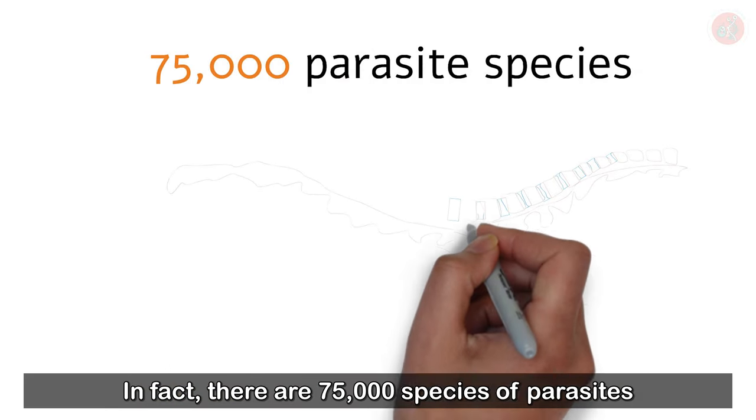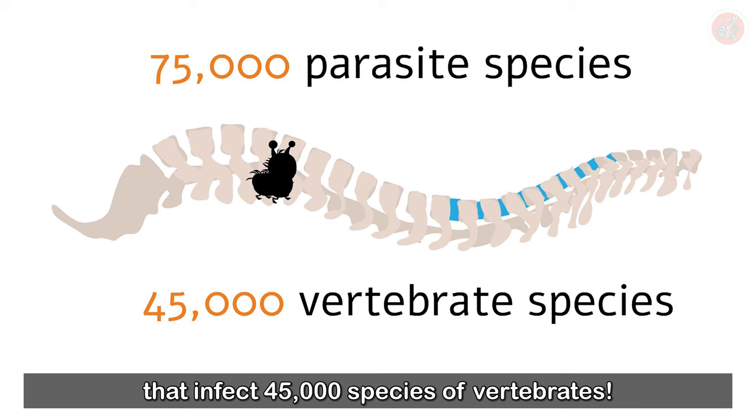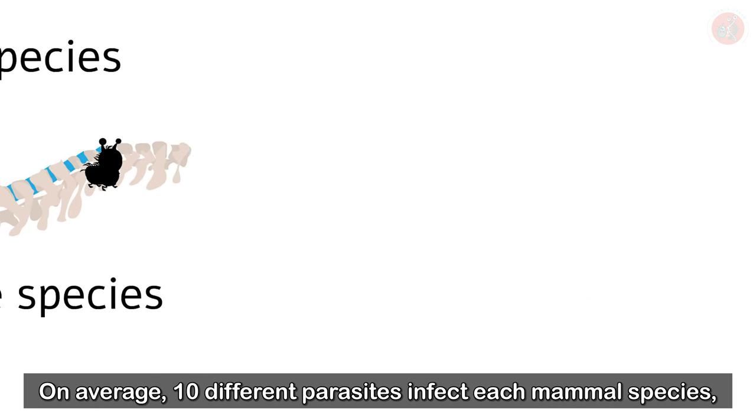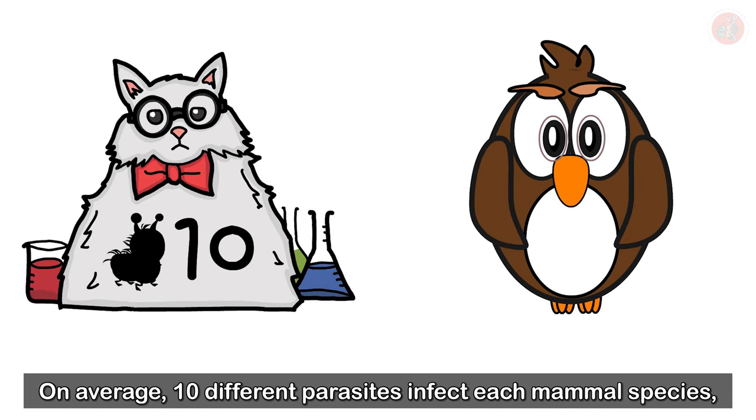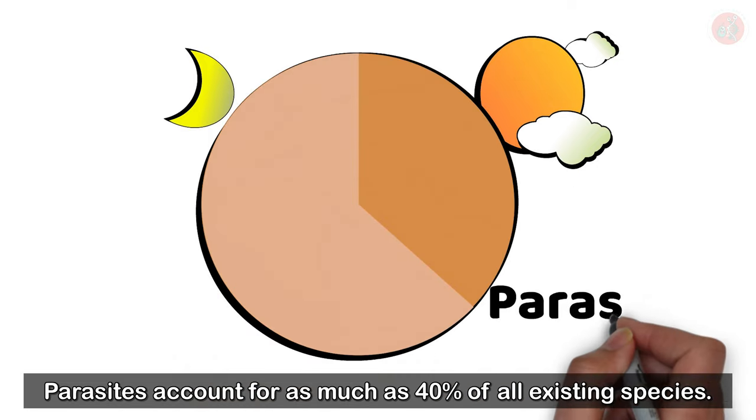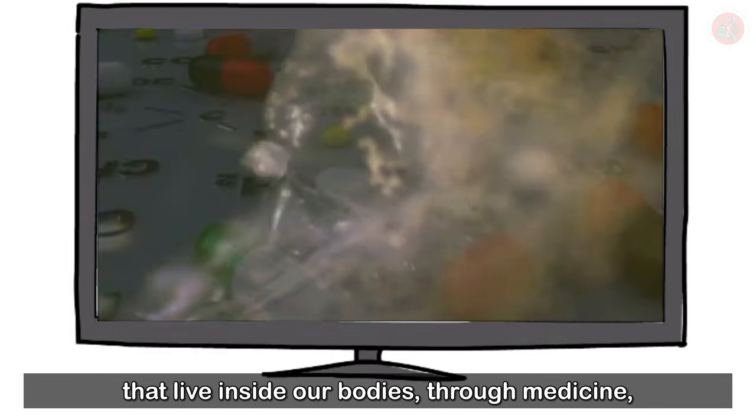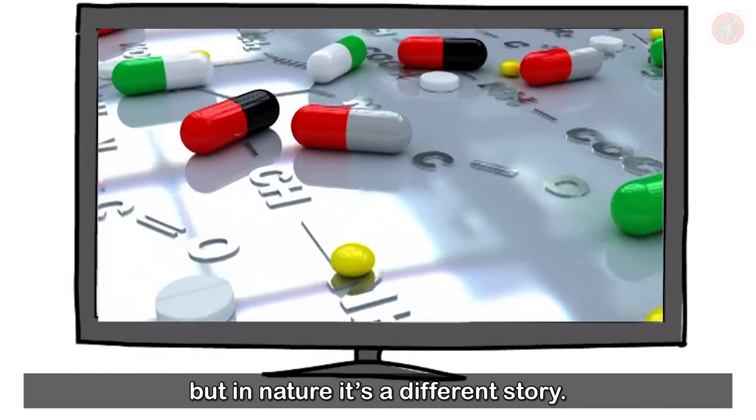In fact, there are 75,000 species of parasites that infect 45,000 species of vertebrates. On average, 10 different parasites infect each mammal species, and 12 types of parasites infect each bird species. Parasites account for as much as 40% of all existing species. Humans have all but annihilated most parasites that live inside our bodies through medicine, but in nature, it's a different story.